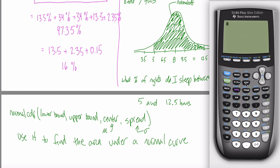Where do you find the normal CDF function in your calculator? It's not under the stat menu, and it's not under stat plots either. It's under a third menu: the distribution menu. Your calculator knows about many distributions, including the normal distribution, and they're all in the distribution menu. It's a bit hidden — it's above the VARS key in blue. Hit second, then VARS, and it takes you to that distribution menu. Look for normal CDF — not normal PDF, which means something different and you'll never use in this class.